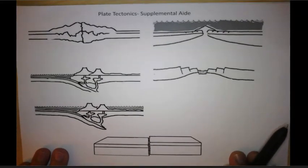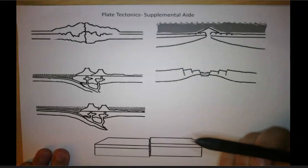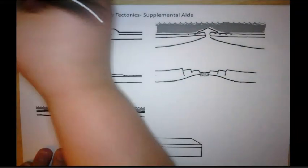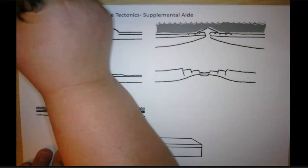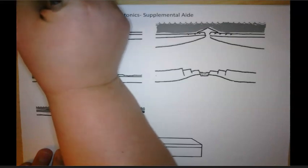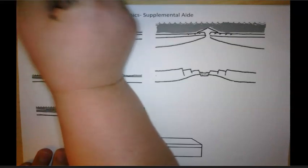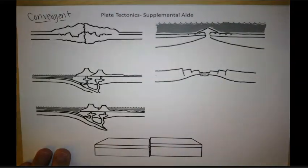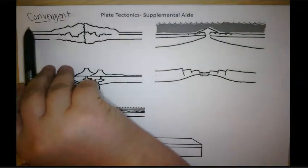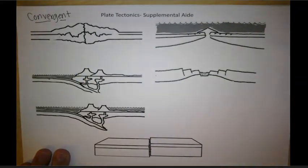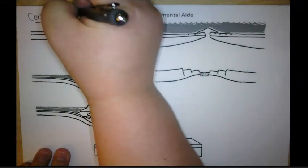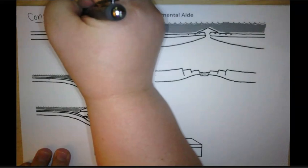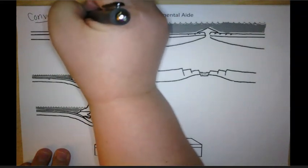The first thing we're gonna start with is the convergent boundaries here on the left side. So here at the top, we're gonna write convergent, and this is gonna apply to all three of these. When we think of convergent, I want you to think of that C and we're gonna think of 'come together.' So here in parentheses, I want you to write 'come together.'